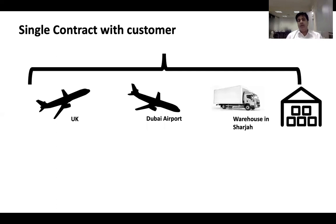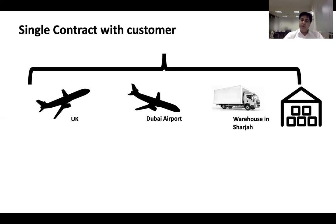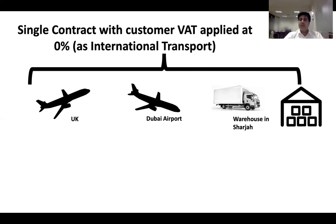Taking the same scenario as a full example: suppose I've received a shipment as a courier from the UK and confirmed delivery to my Sharjah warehouse. I don't care which airport it lands at — my contract says from a UK airport to warehouse in Sharjah. That means I have entered a single contract. If it's a single contract, the whole leg of the transaction is charged at zero rated — it qualifies as part of international transport.